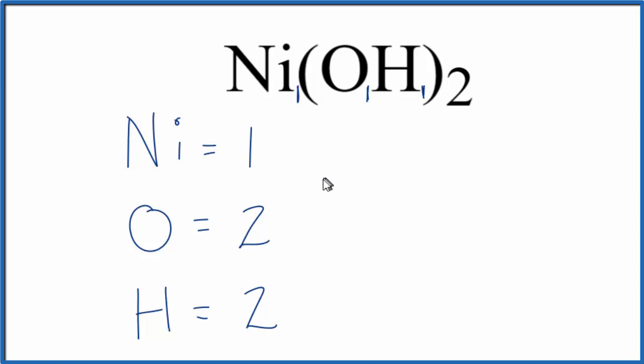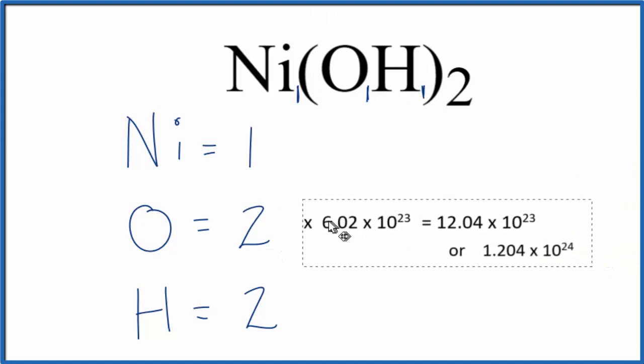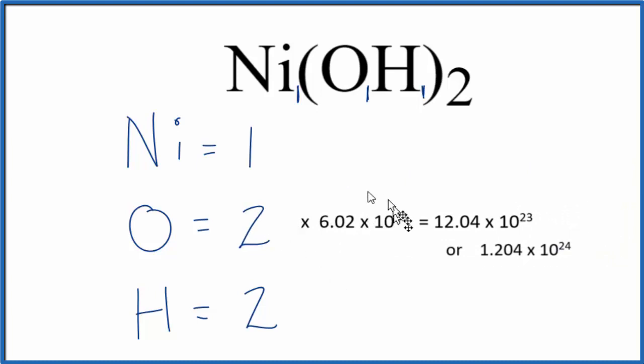Sometimes you're asked to figure out, for example, how many oxygen atoms would be in 1 mole of NiOH2. To figure that out, you multiply the number of oxygen atoms times Avogadro's number. 2 times Avogadro's number gives you the number of oxygen atoms in 1 mole of NiOH2.